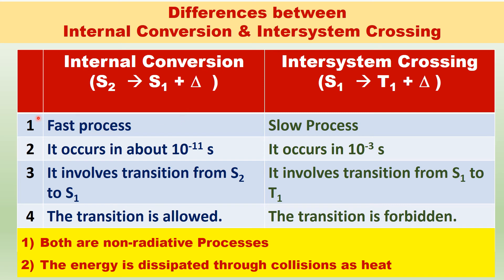Internal conversion is a fast process. The transition is allowed, and it occurs in about 10 to the power of minus 11 seconds. Because it is so fast, it precedes fluorescence.